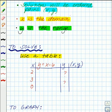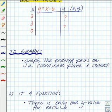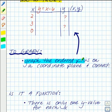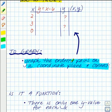After you've solved your equation using a table, you'll be able to graph it. What you'll do is graph the ordered pairs from this column on a coordinate plane, and connect them with a line or lines, however it turns out to be.